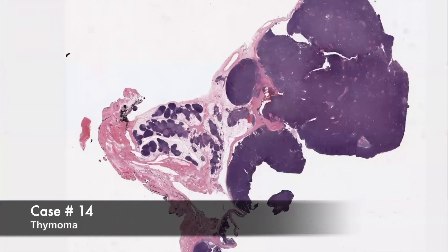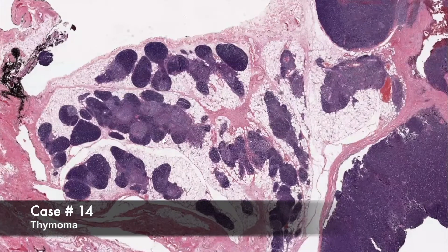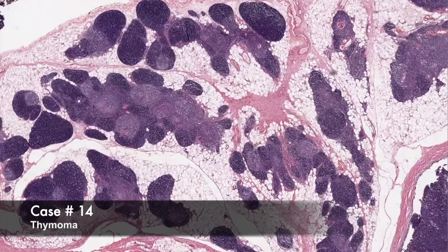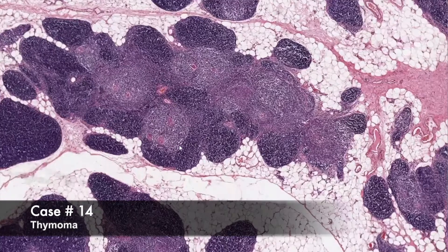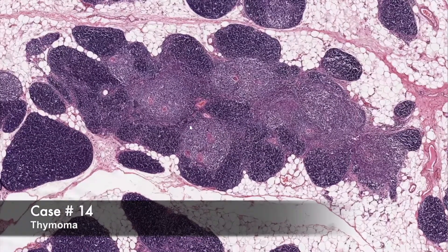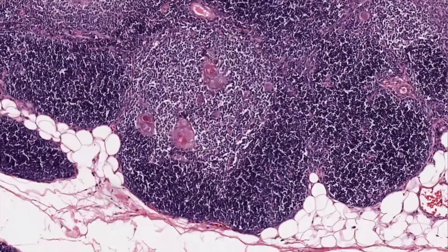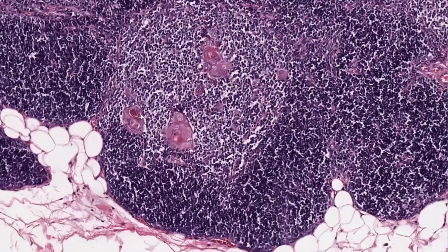Here we have a mediastinal mass and you can see there's a little bit of residual normal thymic tissue. We see this nice lobulated architecture and then a nice contrast between these darker staining areas and these lighter staining areas. We have these dense areas of the cortex and medullary areas that are lighter staining, with Hassall's corpuscles here.